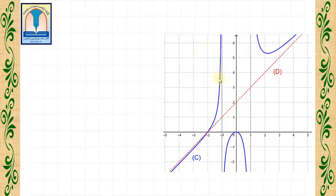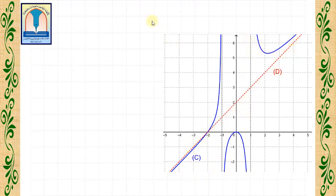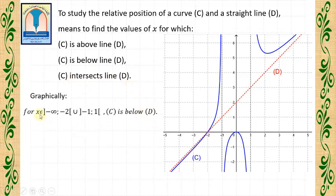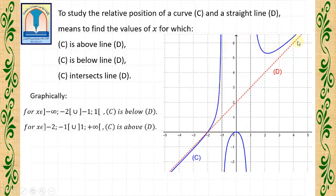Let us see it graphically first. This is the curve of a function F, and this is a straight line D. To study the relative position of curve C and straight line D means to find the values of X for which C is above line D, C is below line D, or C intersects line D. Graphically, we can notice that for X belongs to (minus infinity, minus 2) union (minus 1, 1), C is below line D, and for X belongs to (minus 2, minus 1) union (1, plus infinity), C is above line D.